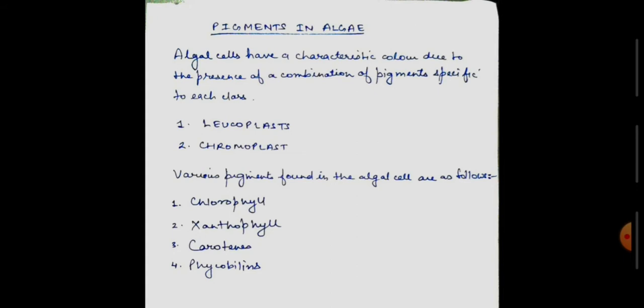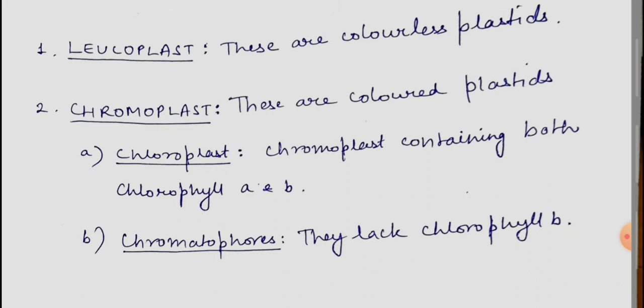Plastids are of the following two types: Leucoplast or Chromoplast. Leucoplasts are colorless plastids and Chromoplasts are colored plastids. Chromoplasts are again further subdivided into chloroplasts and chromatophores. Chloroplasts contain both chlorophyll A and B, and chromatophores lack chlorophyll B. In Phaeophyceae, chromatophores are found.